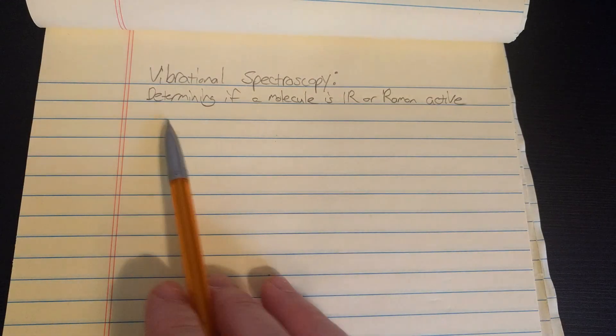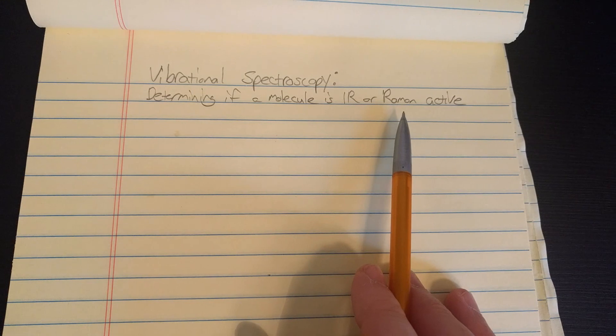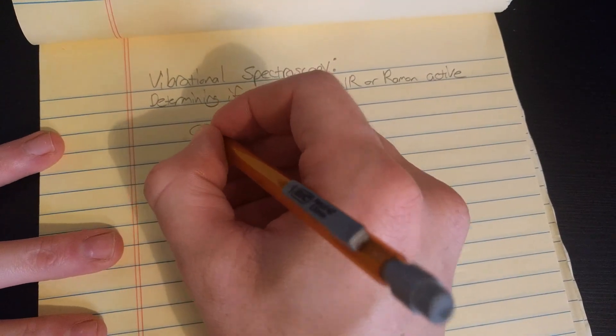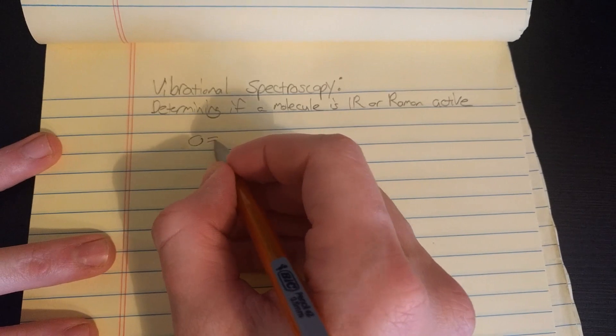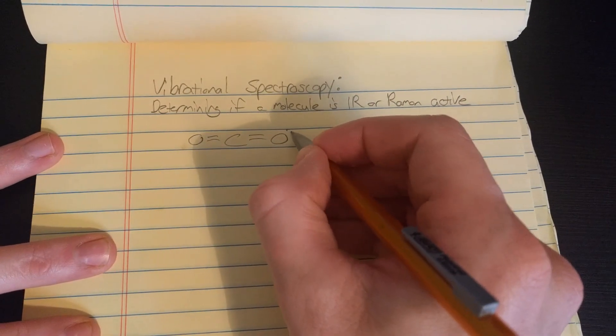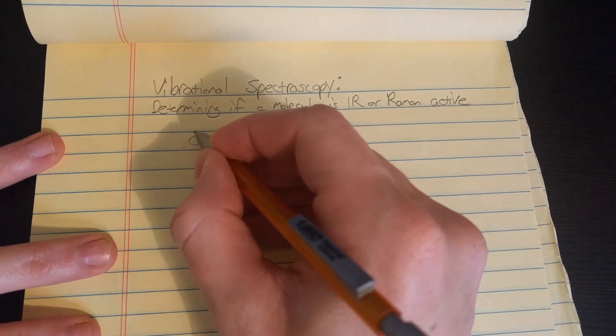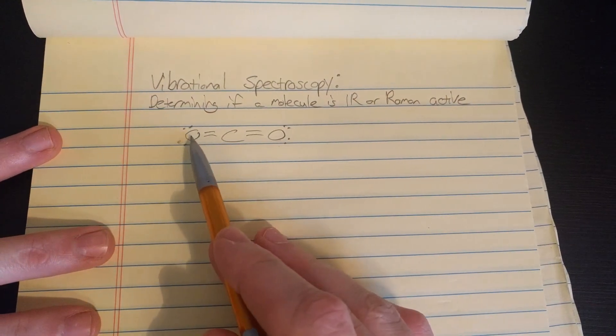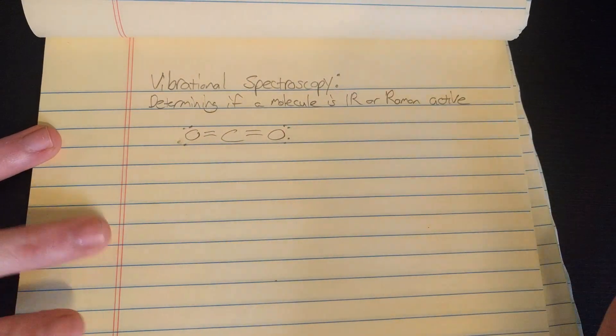Another way of stating this is just to ask if does the molecule obey the selection rules. So our example is going to be carbon dioxide, which the Lewis dot structure looks like this. It's a linear molecule and the oxygens each have two lone pairs on them.